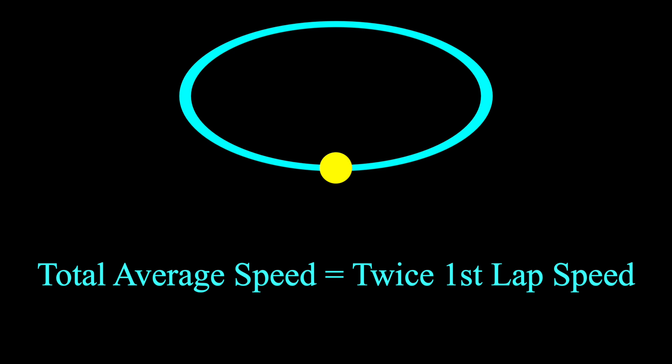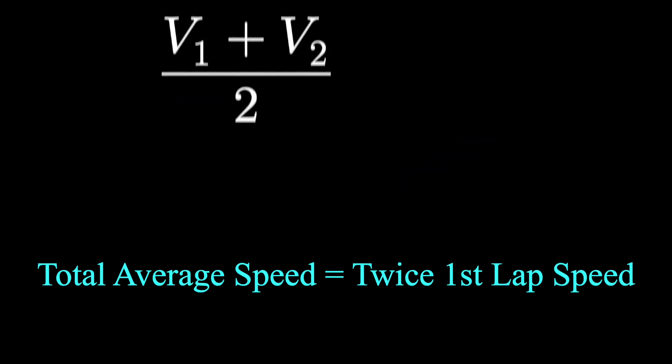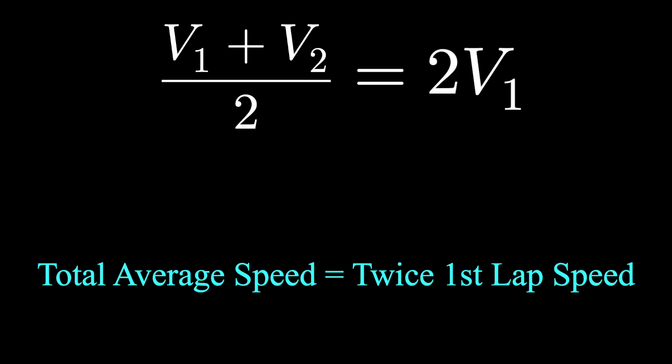Admittedly, when I first heard this question, I thought, no problem. Let's just average the two speeds. I'll call them V1 and V2 for velocity of the first lap and velocity of the second lap. We just add these and divide by two to take their average, and this should equal twice V1, twice the speed of the first lap.